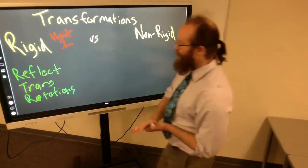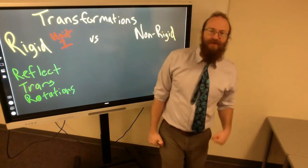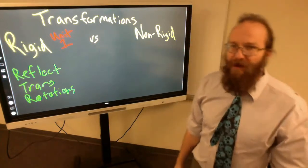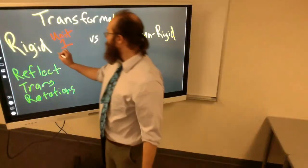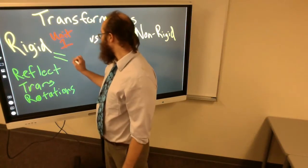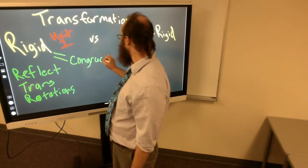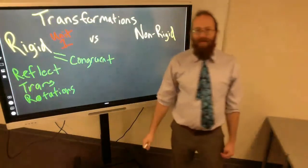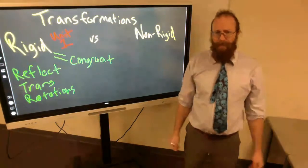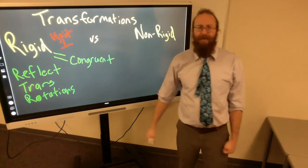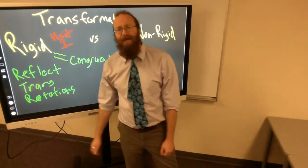So rigid transformations. What that means is rigid is really strong, sturdy, and it doesn't like to move, right? If you're rigid, you're stuck in one place. So rigid makes congruent shapes. And this was a concept we had just started learning about. Congruent means same size, same shape. So a rigid transformation makes a congruent shape. And those are reflections, translations, and rotations.